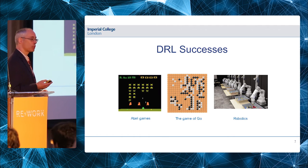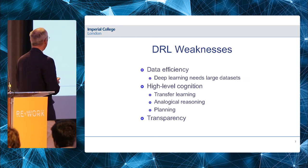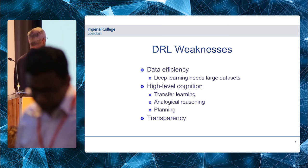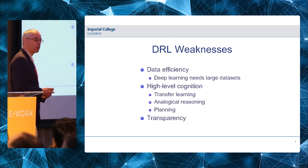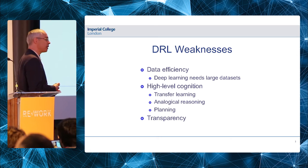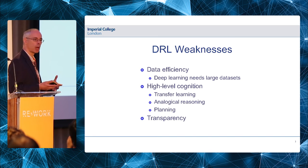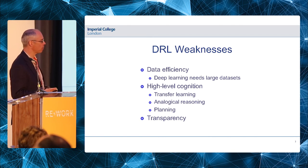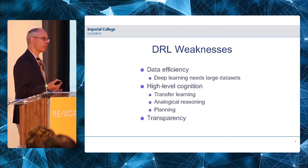Deep reinforcement learning is a very promising paradigm. However, the current generation of deep RL has some weaknesses inherited from current deep learning methods. In particular, data efficiency: deep learning requires very large quantities of data to build up a statistical picture of the domain of interest. When you watch DQN learn to play a game like Space Invaders, it's very slow, whereas a young child would very quickly pick up the idea that you need to avoid bombs.